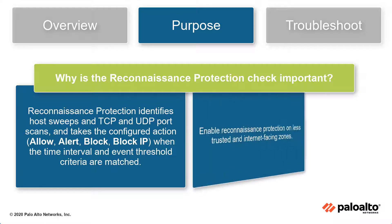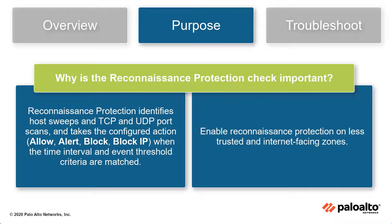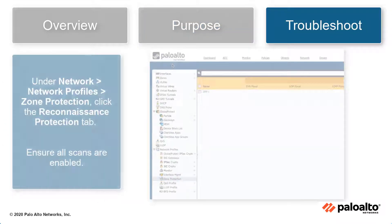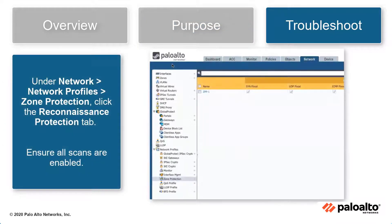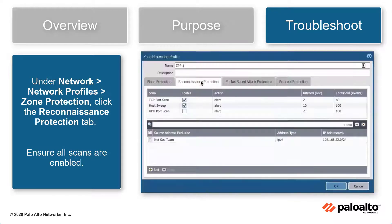Enable Reconnaissance Protection on less trusted and internet-facing zones. Under Network, Network Profiles, Zone Protection, click the Reconnaissance Protection tab. Ensure all scans are enabled to pass the Best Practice Check.